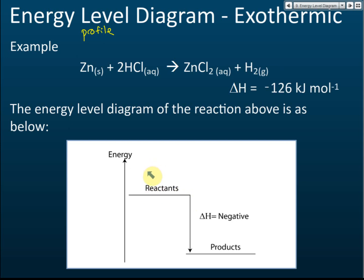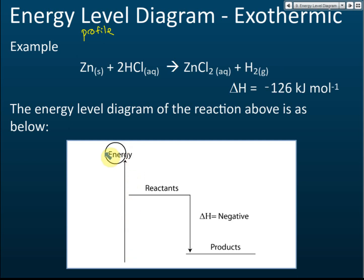For this energy profile diagram, there is only one axis — the vertical axis. Make sure that you label it 'energy.' If you do not label this, marks will be deducted. When asked to draw an energy level diagram, you only draw the vertical axis and label it 'energy.'